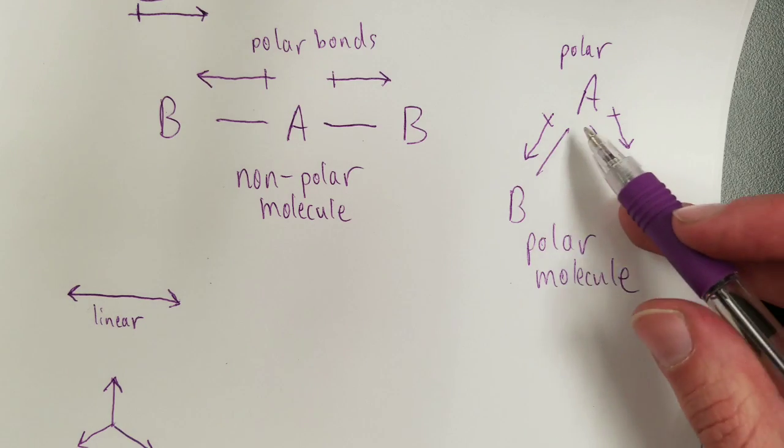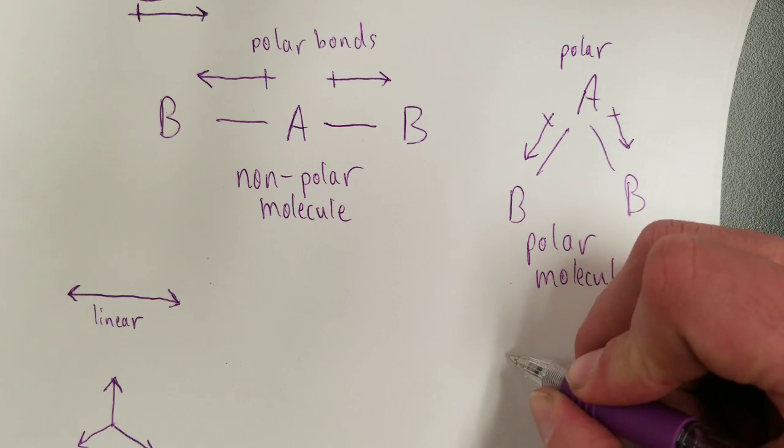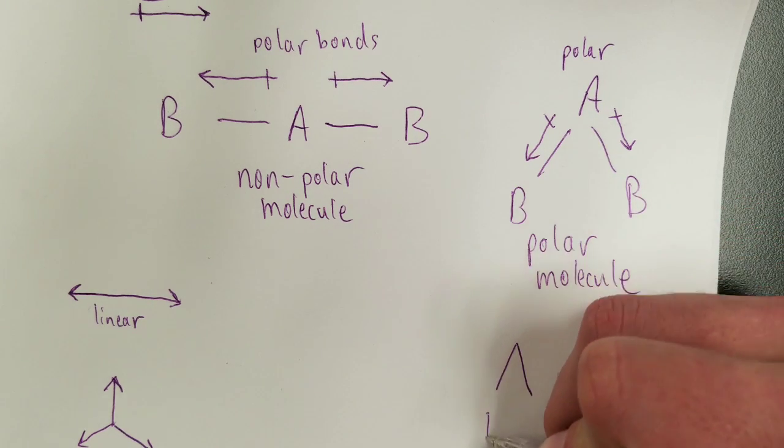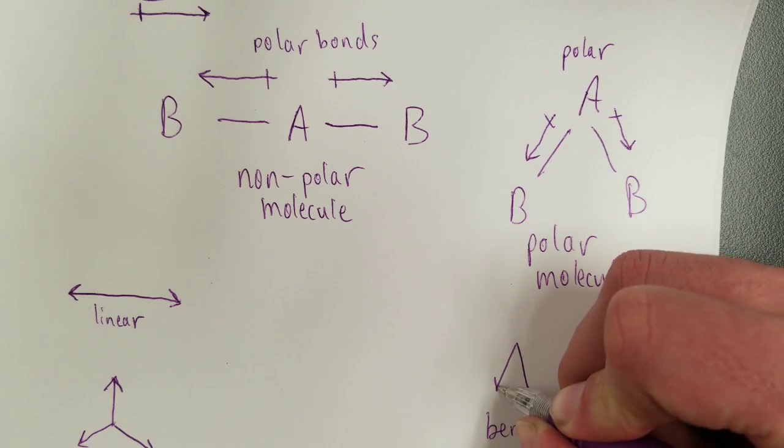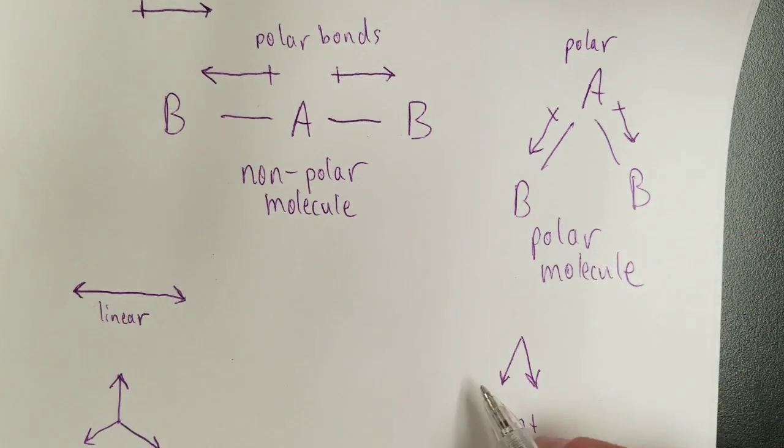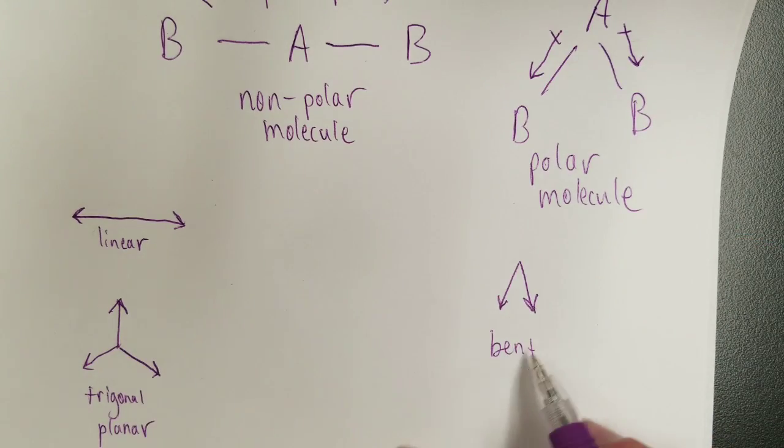Now this would be a bent shape right here. So a bent shape would fail to cancel out. Thus, this would produce a polar molecule if these are polar bonds.